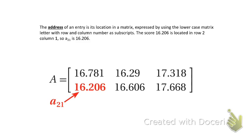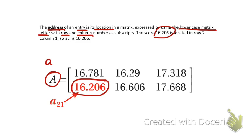And each entry of a matrix has what we call an address. The address tells you where an entry is according to its location. And we express the address by using the lowercase matrix letter. In this case, we have matrix A, so lowercase would be the lowercase a. And we use our row and our column numbers as the subscripts. So if we take the score of 16.206, we look at what row it is first. So we look, we have row one and row two. So it is in row two. And then we look at the columns. We find that it is in column one. So 16.206 would have an address of A sub 21. In other words, row two, column one. And that's how you read an address.